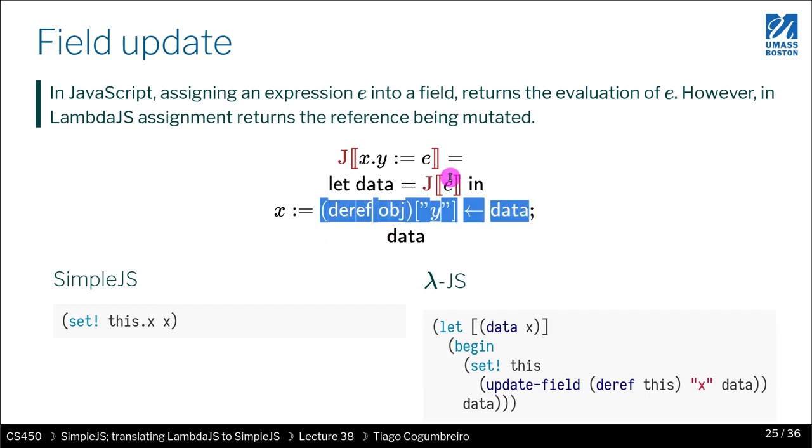And then what we do, we do the update of the already evaluated value. So that's what we have here. And now we need to update, store again, the new object. So that's what we're doing. x is the reference, so it's the handle. And we update the new object with this line. And then what we need to do in JavaScript, if you do an assignment, it returns the value of e. So that's why we return data. Data represents the evaluation of e.